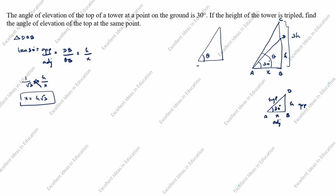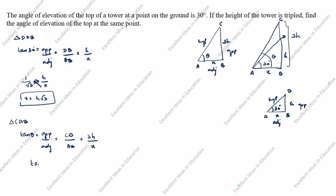Next, we take the second triangle with angle θ. Here A, B, C — the height is 3h and the base is x. The opposite side is 3h, the adjacent side is x, and the hypotenuse is AC. In triangle CAB, tan θ equals opposite over adjacent, which is CB over AB. So tan θ equals 3h over x.